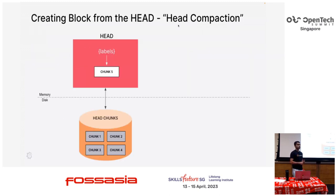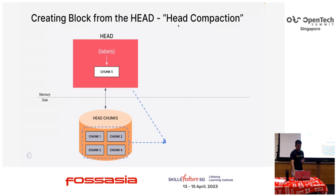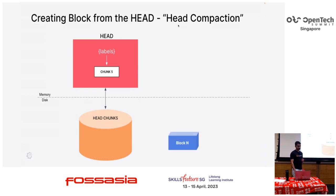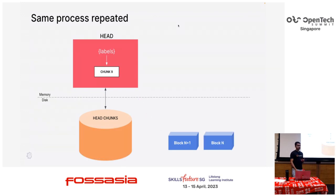This process is called head compaction, where we take the data from the memory-mapped chunks which are on disk, and also some data in memory if it falls within some logic that Prometheus decides — we want to compact data from this time range to this time range and just create a block. The same process repeats and we create another block. The earliest block is numbered n, the new block is n+1 — it's a linear set of blocks that come into the TSDB.